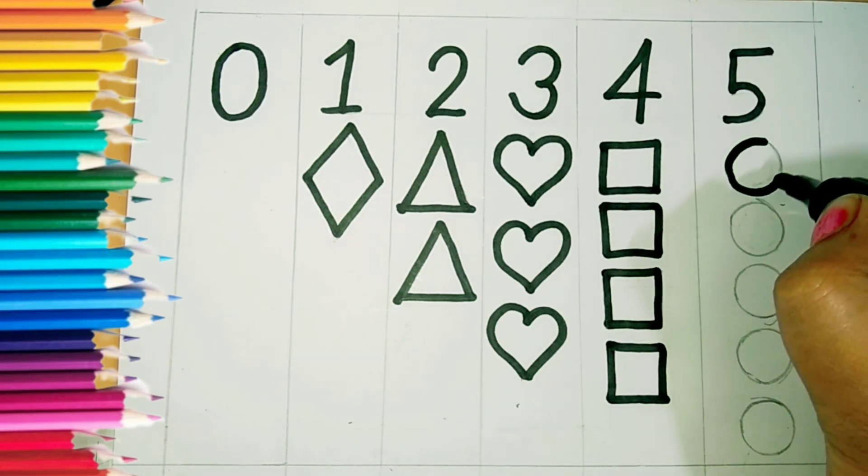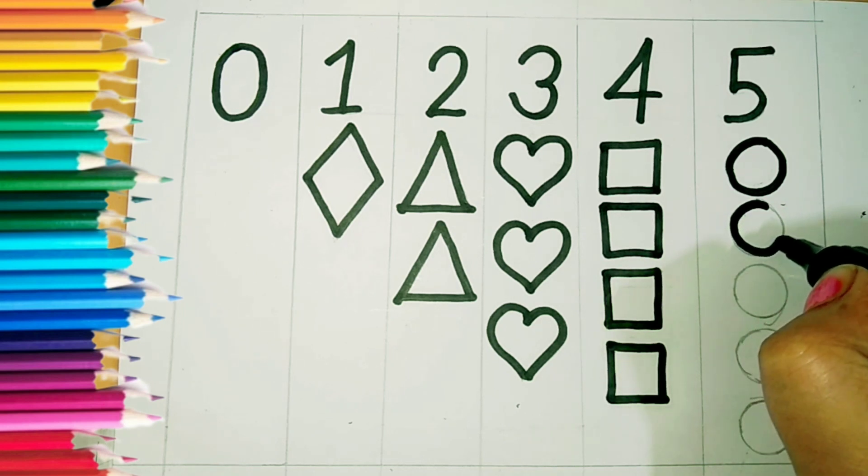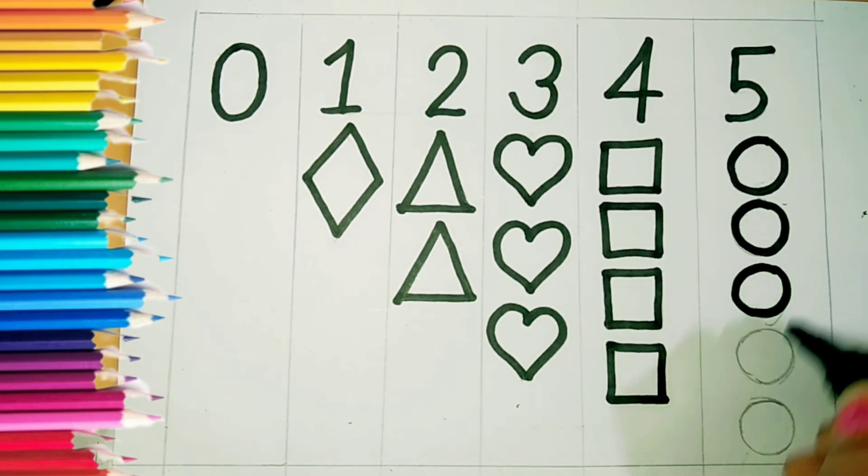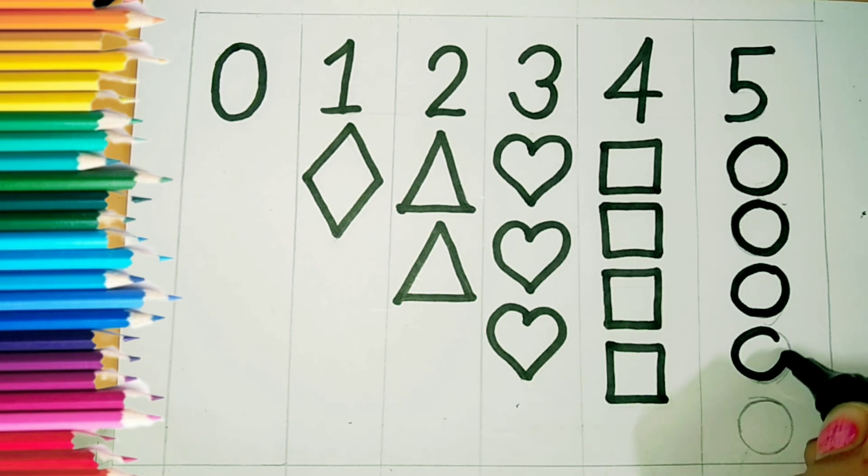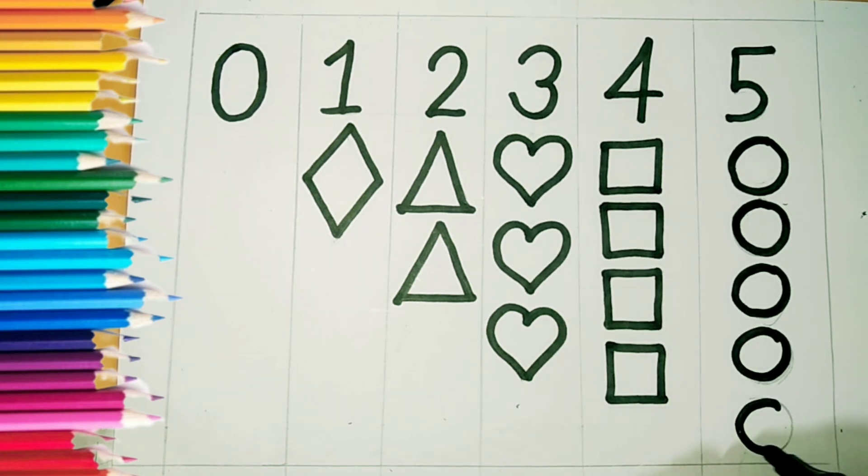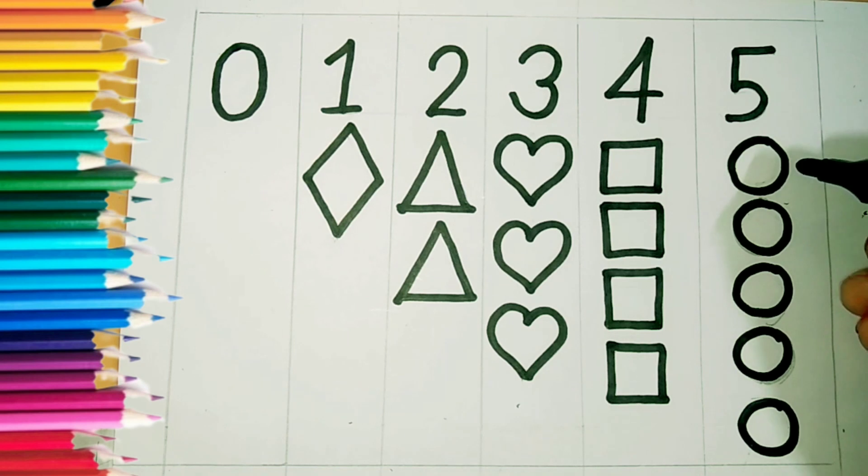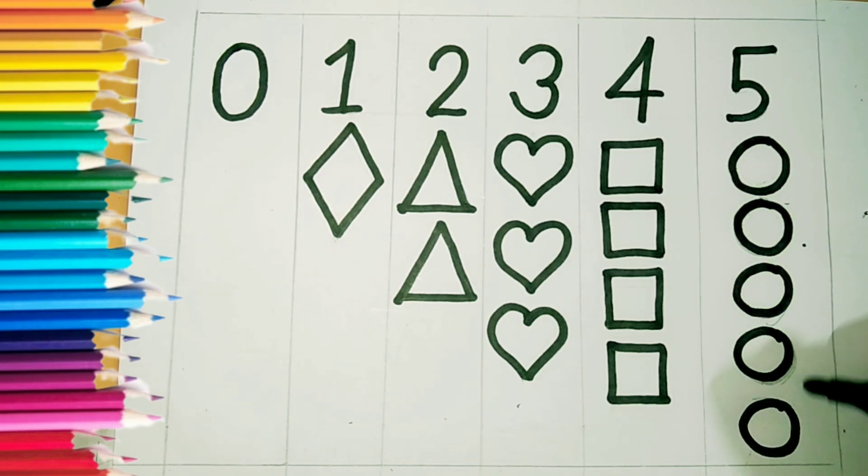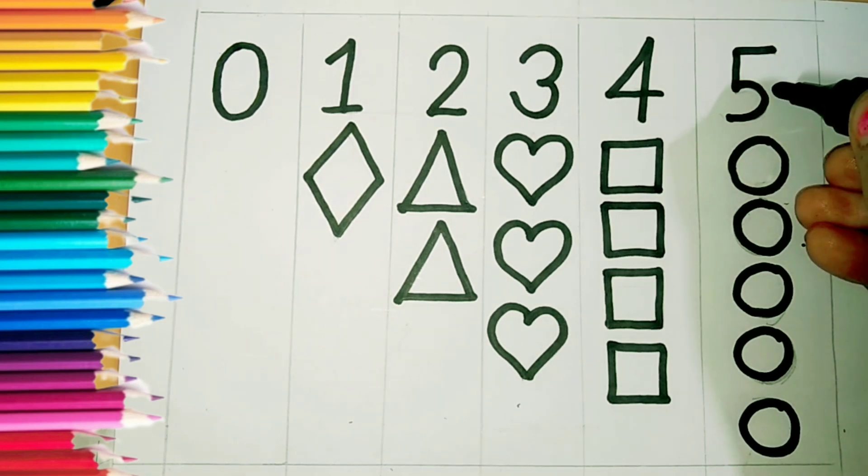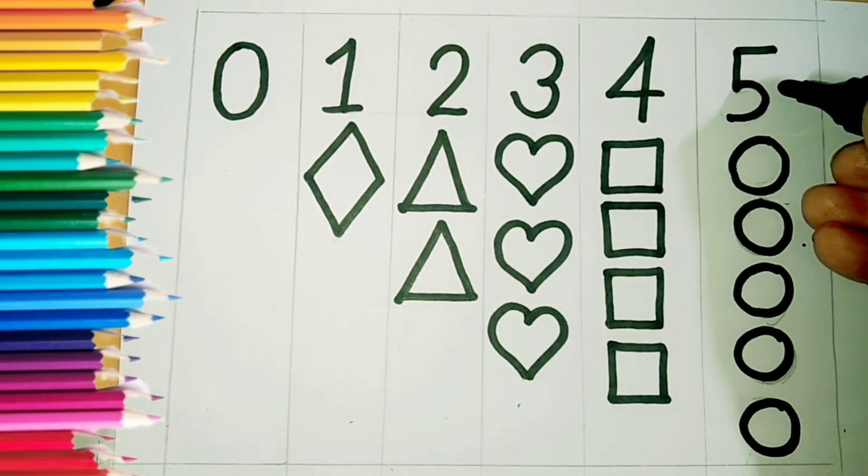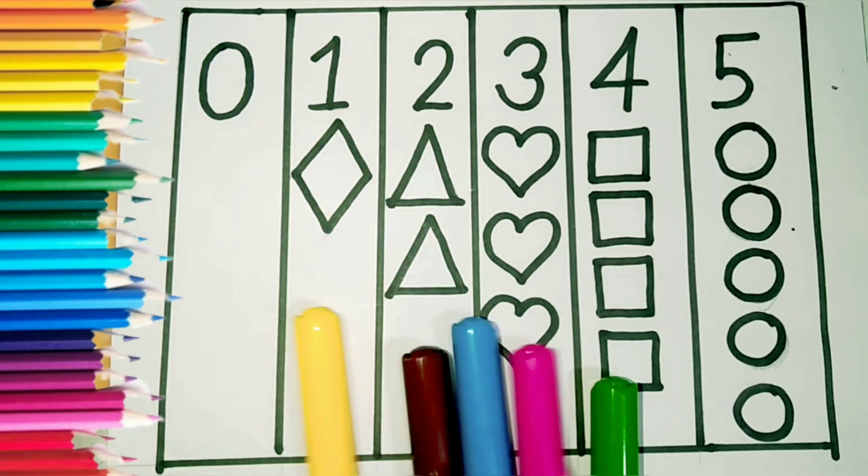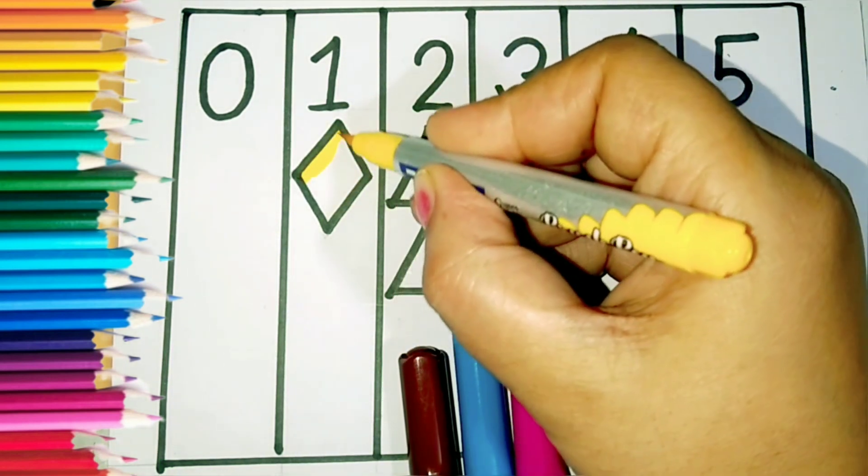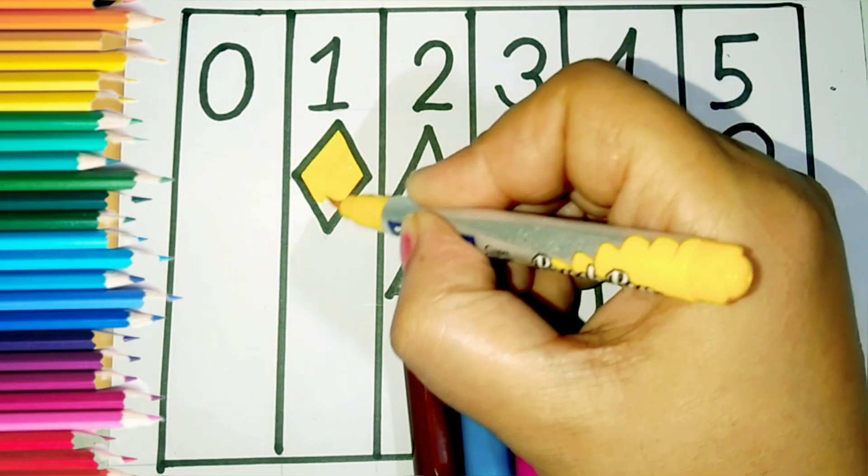This is a four circle. This is a circle. Now count, one, two, three, four, five. This is a five. Five circles. Start colors. This is a yellow. This is a yellow color. We are done yellow color.